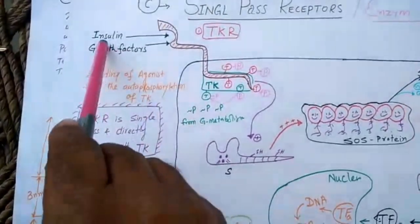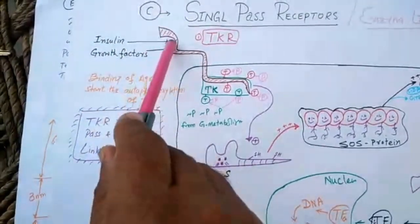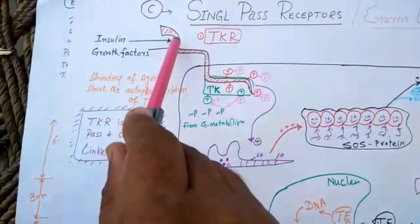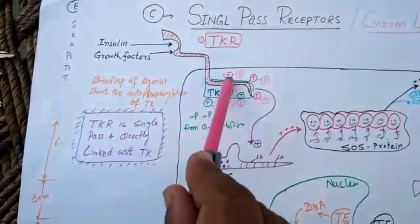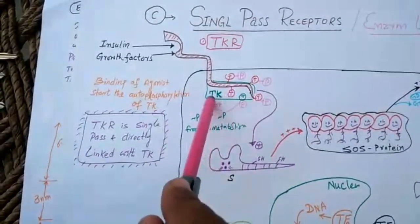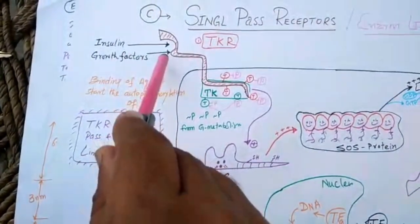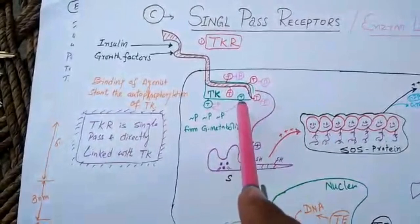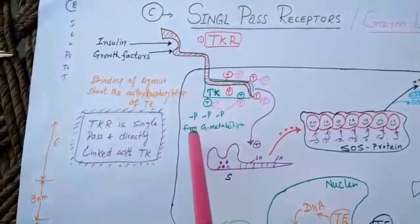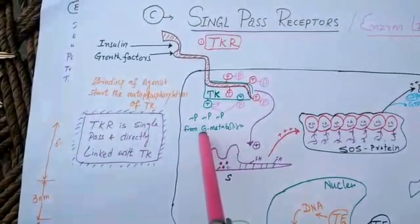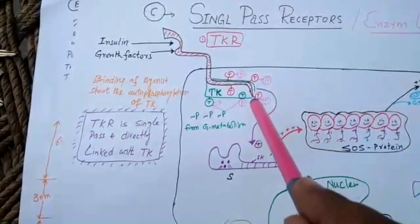Once the agonist, let's suppose insulin or growth factor, binds with this extracellular domain, it activates this intracellular part, which is connected to this tyrosine kinase enzyme. The binding of this agonist results in the self-phosphorylation of these tyrosine residues. These phosphates are present in the cell from glycolysis ATP.